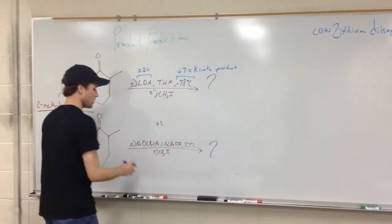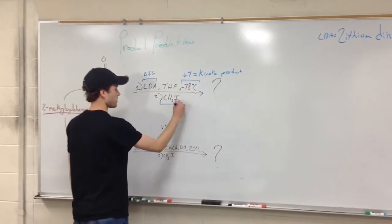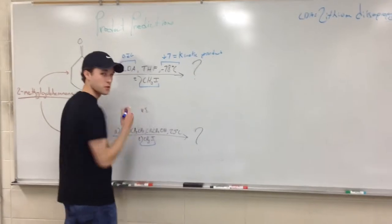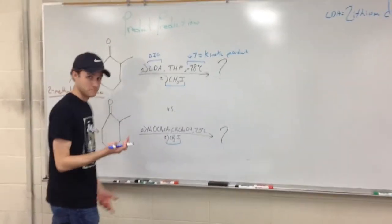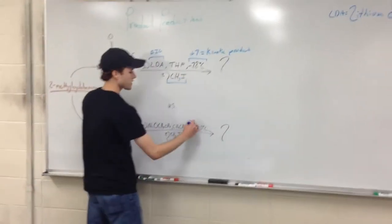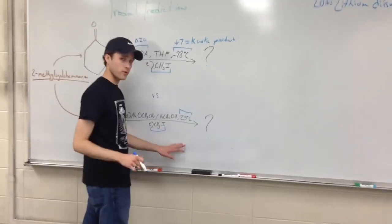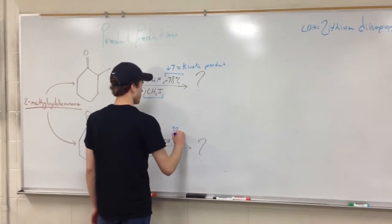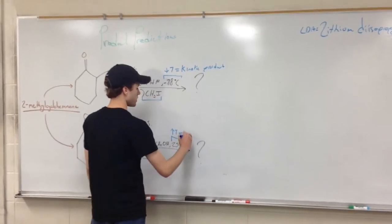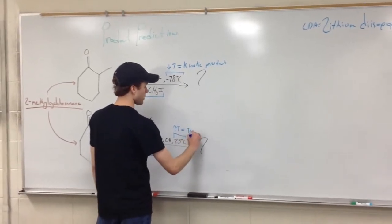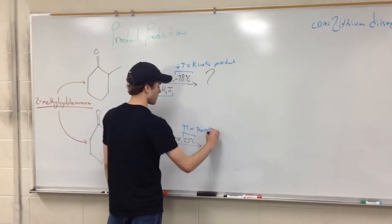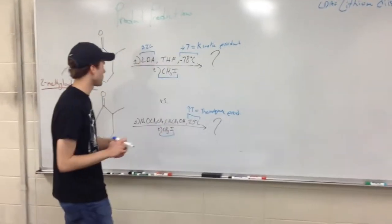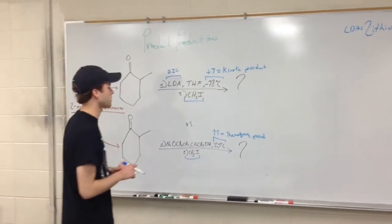This second reaction down here — we have methyl iodide for both of these, so that's going to be the same and we're going to end up adding a methyl group. This one is taking place at 25 centigrade, so pretty warm conditions. Higher temperature is going to equal a thermodynamic product. So this is what we can just look at to start things off.